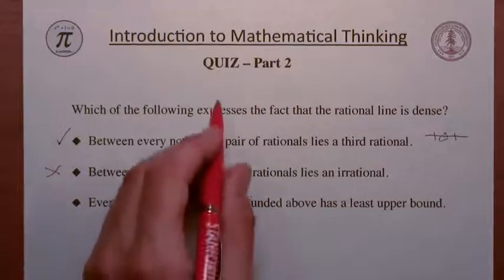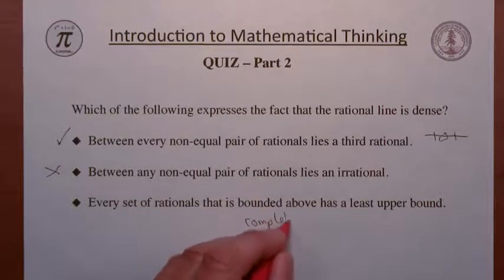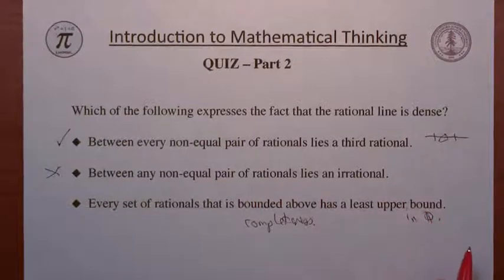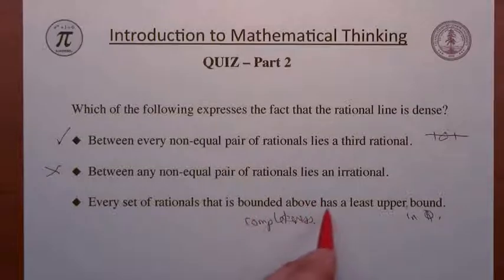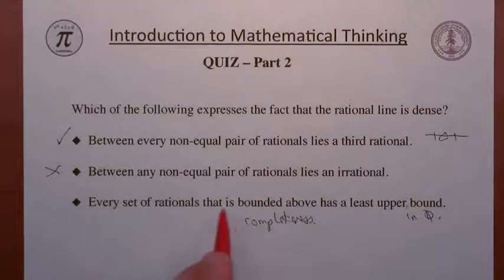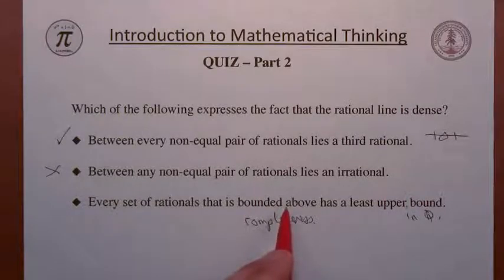That one's true, but it's not the answer to the question. The third option is actually expressing the notion of completeness. If by least upper bound we mean least upper bound in the rationals, then that would say the rational line is complete, which is false. If we interpret it to mean every set of rationals bounded above has a least upper bound in the real numbers, then that is an instance of the completeness of the real line. This issue about the existence of least upper bounds is what distinguishes the reals from the rationals, and it's what makes the reals a powerful system for doing advanced mathematics and calculus in particular.